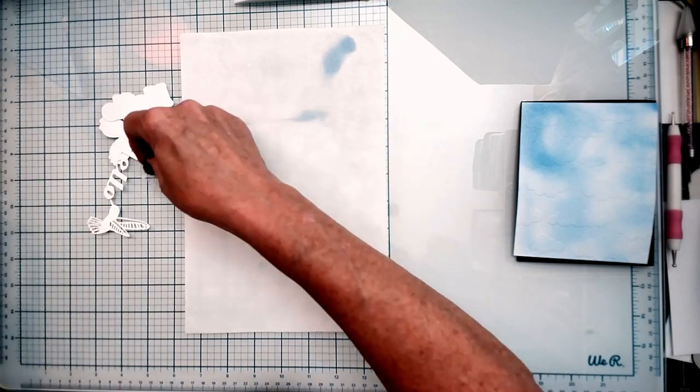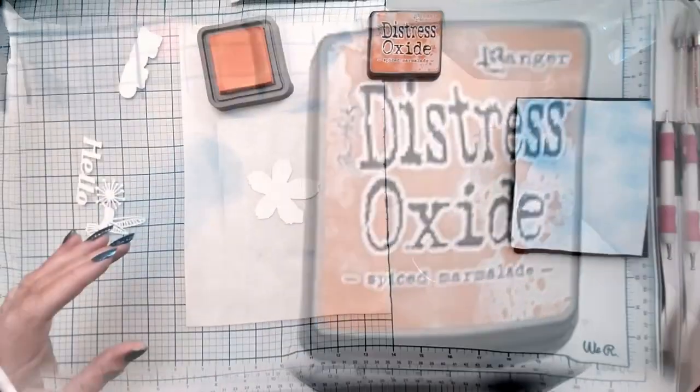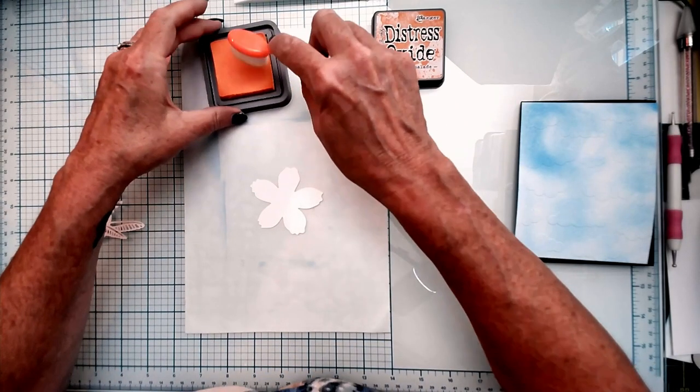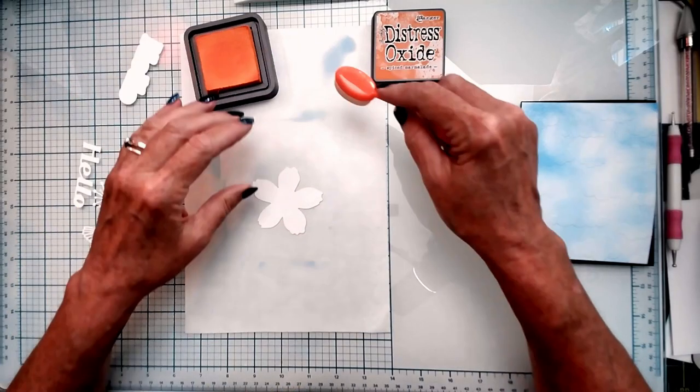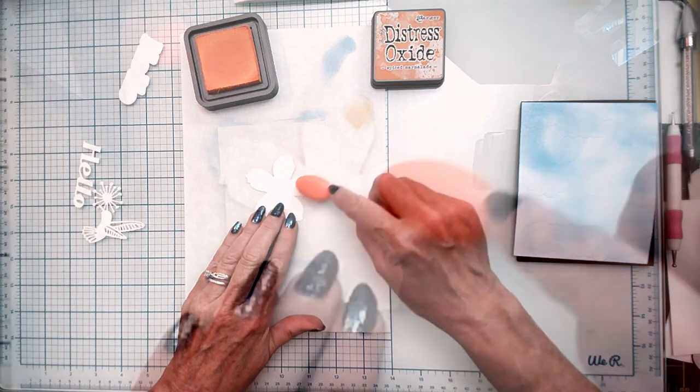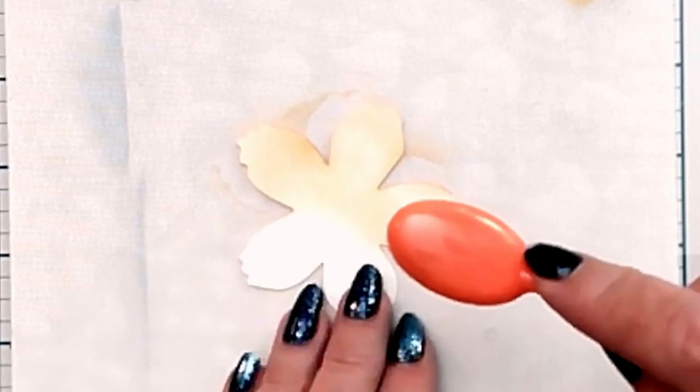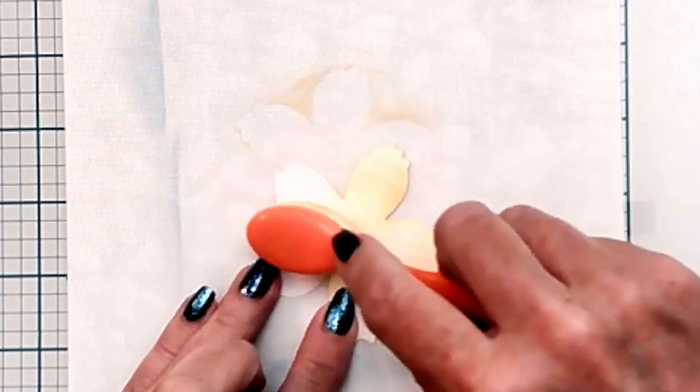So we're going to start blending our flower. This is so pretty. Blending ink is not difficult if you have the right supplies. You want to make sure that you tap off after you apply your ink. Tap off so it's not too much that you're putting on, and you have an even spread like so. It's important to make sure that you tap it off.